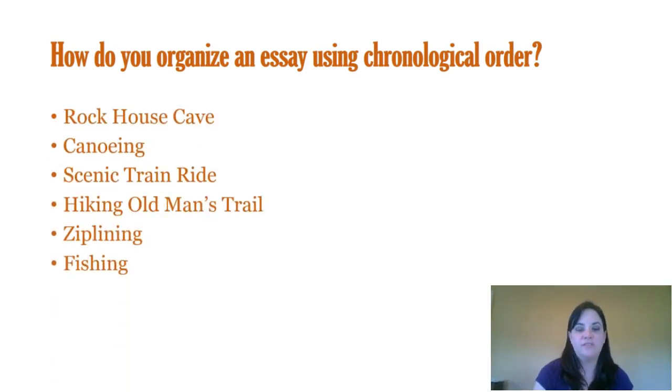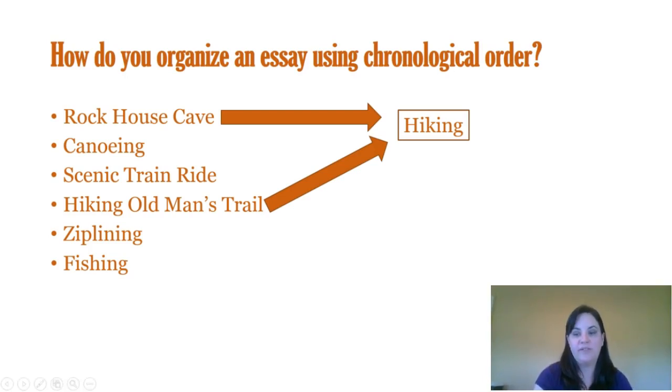So here's my list of main ideas. How can I group them together? Two of my ideas are about hiking in the national parks, Rock House and Old Man's Trail, so one paragraph can be about hiking.